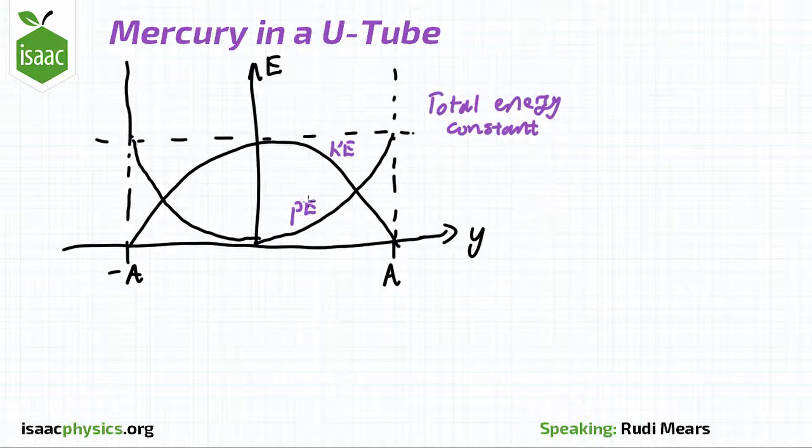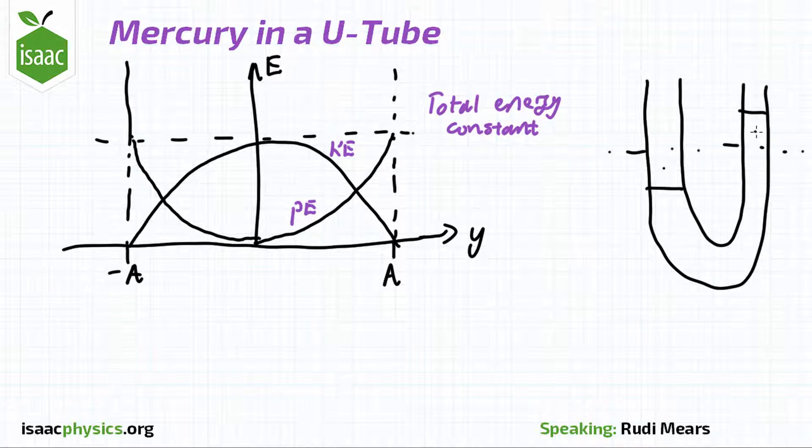The obvious one to go for is the potential energy. An easy way to think about the potential energy of the mercury is to imagine that a chunk of fluid is moved from one arm to the other.